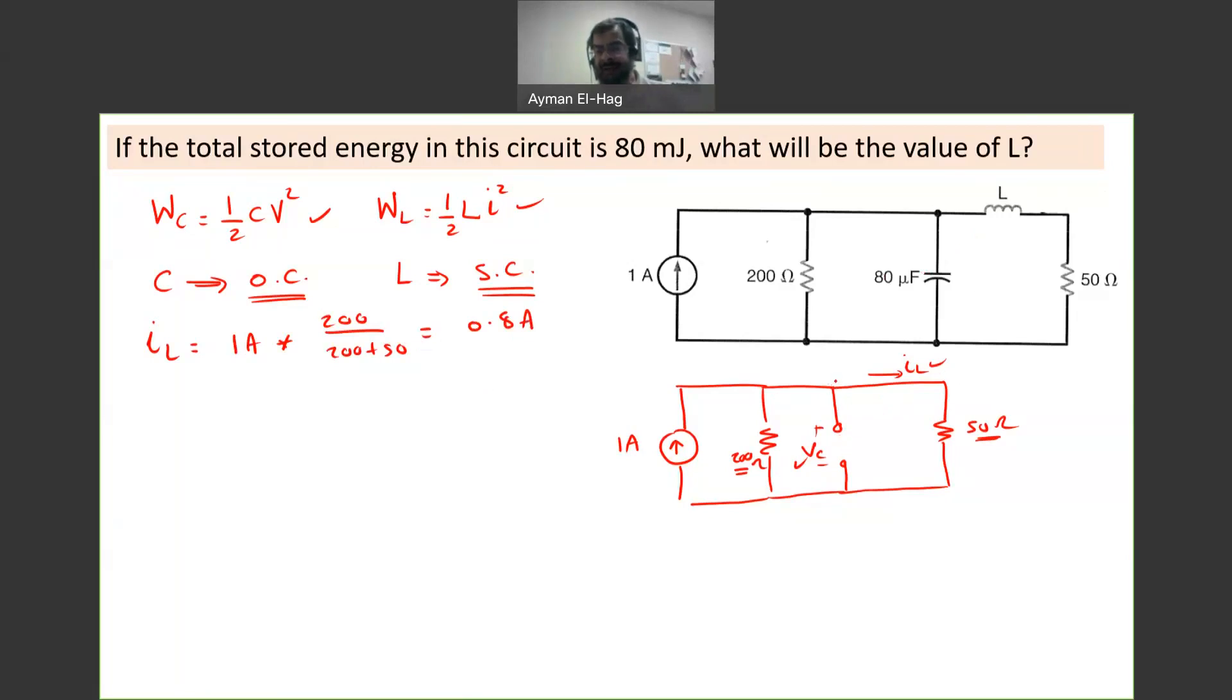This is equal to 0.8 amps, so we found IL. Now we need to find VC. VC is the voltage between this point and this point, which is basically the voltage across the 50 ohm. So VC will equal IL, which is 0.8, times the resistance which is 50, and this will give me 40 volts.